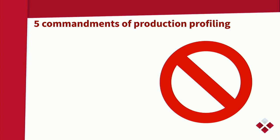Five things you should never do on a production server when profiling. First: never reboot the Odoo instance. You will put users on downtime, and you may stop the performance issue from happening because it may be related to a long-lasting process. If you reboot, you don't capture the performance state anymore and you'll have to wait another couple of hours for it to happen again. Do not reboot the server.